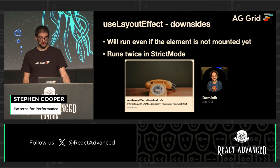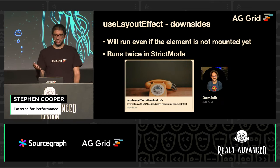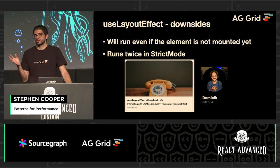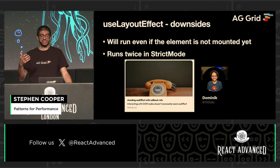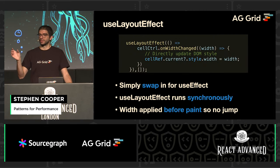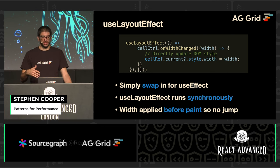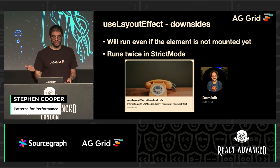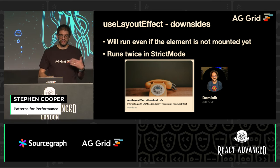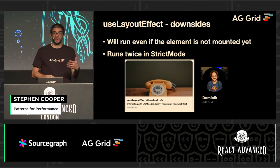But there are some potential downsides: useLayoutEffect is going to run no matter whether this cell is mounted in the DOM or not. It could be conditionally rendered, but the logic in this useLayoutEffect, because it's dependent on the component itself with an empty dependency array, whenever this component is first rendered this code is going to run. Also it runs twice in strict mode, which can mean you have to take other actions. There's a good blog post from Dominic about avoiding effects with callback refs, which is an even better approach to solving this problem.